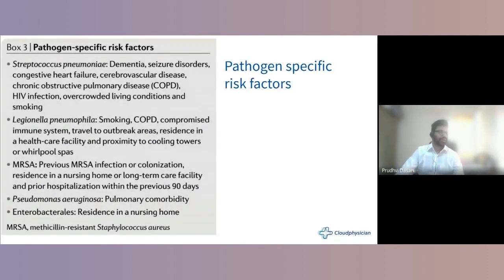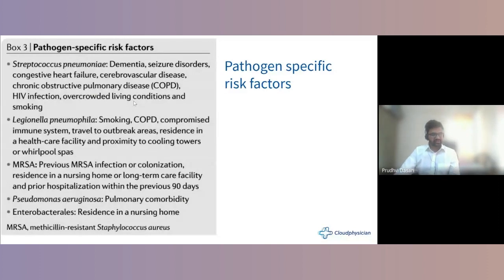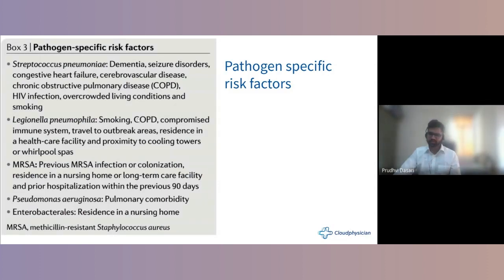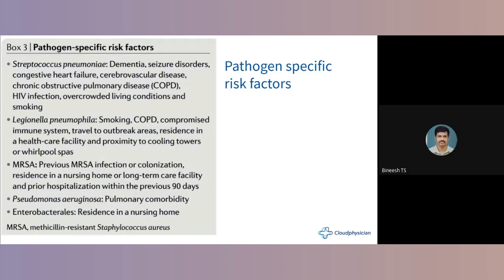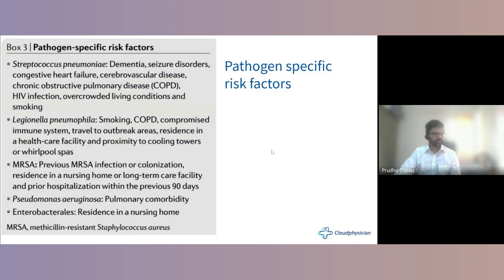Risk factors for HCAP include age over 60 years, aspiration pneumonia, impaired neurological conditions, post-stroke rehabilitation, impaired swallowing, and impaired consciousness. In our case, the patient fed through a Ryle's tube likely had micro-aspirations from swallowing difficulty. Pathogen-specific risk factors: MRSA risk includes previous MRSA infections, residence in a nursing home or long-term care facility, and prior hospitalization within 90 days.